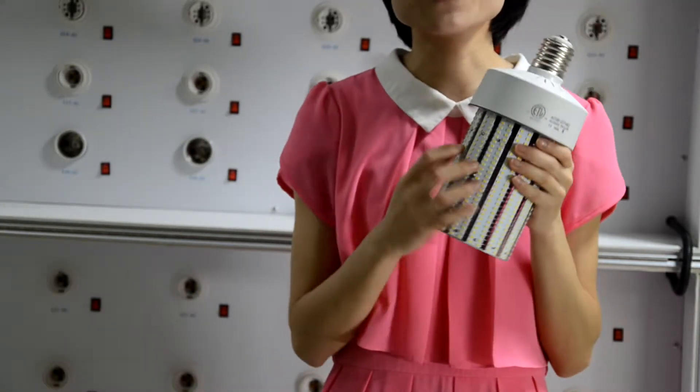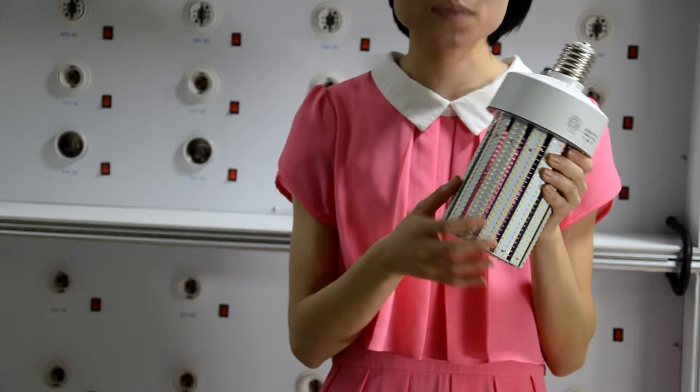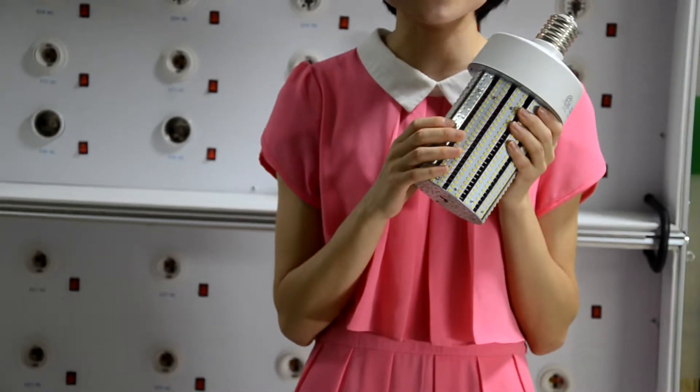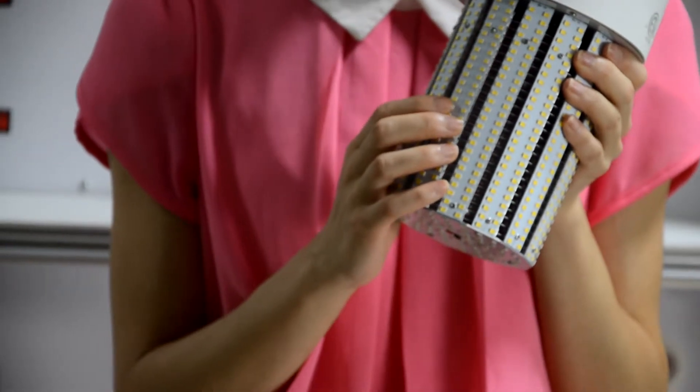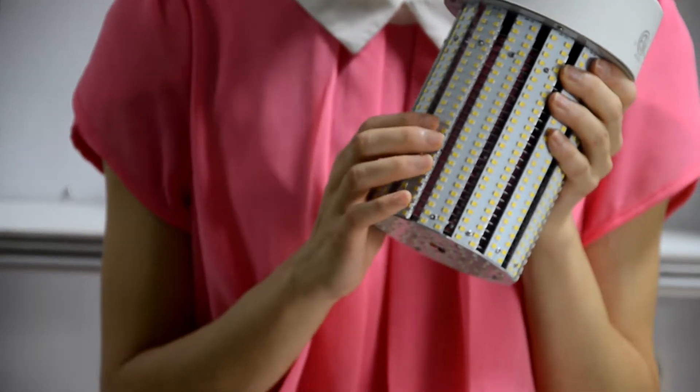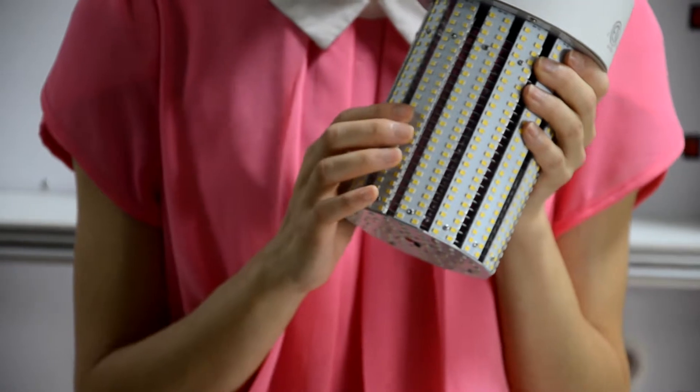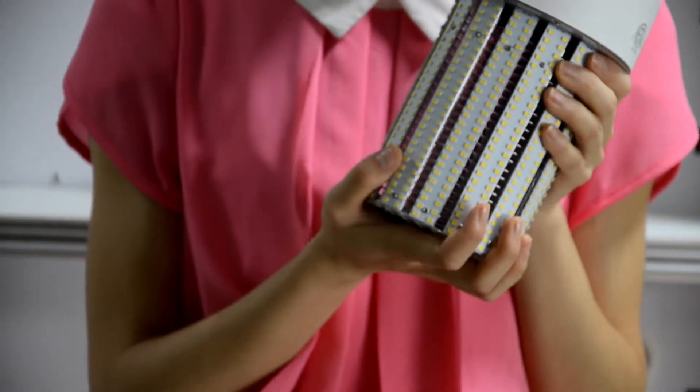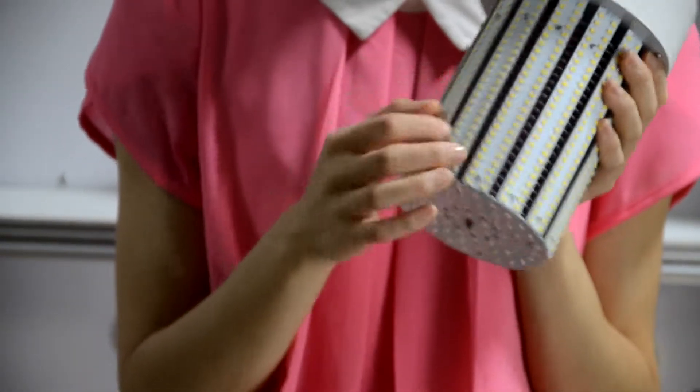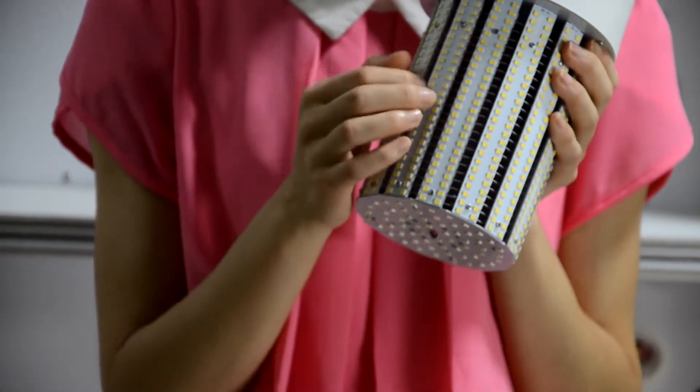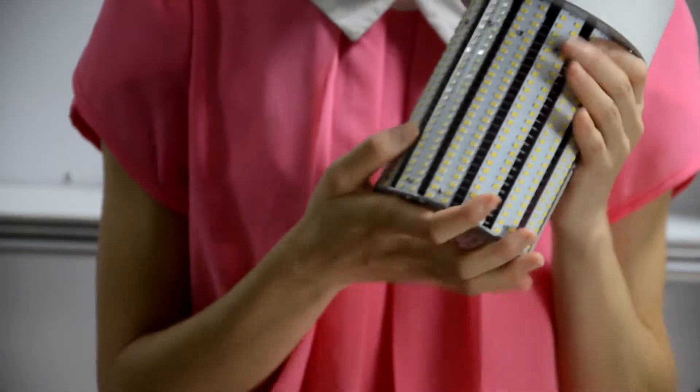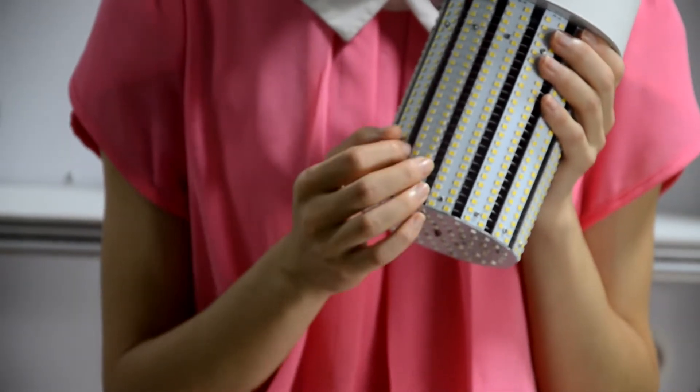Okay, then take a look at the body of the lamp. You will see the LED chips. We use the EPI stock imported from Taiwan. It has higher lumens, power factor, and CRI. Inside, you will see the aluminum finned heat sink. It's very good material and design.